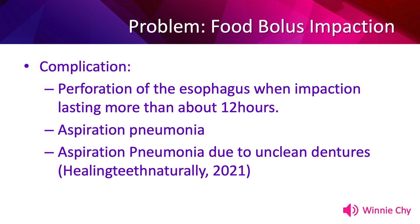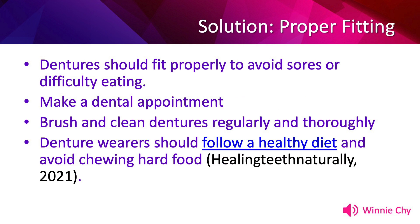Food bolus impaction is a serious problem that needs to be addressed immediately. Solutions that help prevent food bolus impaction and maintain the health of the older adult include: dentures should fit properly to avoid sores or difficulty eating — properly fitted dentures encourage the person to wear them, especially during mealtime, decreasing the risk of food bolus impaction. Schedule routine dental appointments, as dentures need periodic adjustment, occasional relining, or replacement to ensure a proper fit. Additionally, brush and clean dentures regularly and thoroughly to prevent buildup of plaque, tartar, and fungal infection. Denture wearers should follow a healthy diet and avoid chewing hard food.